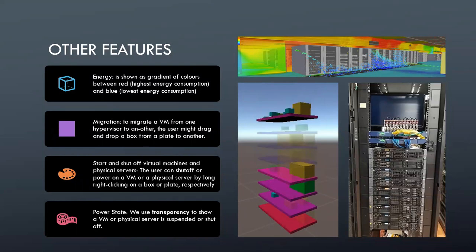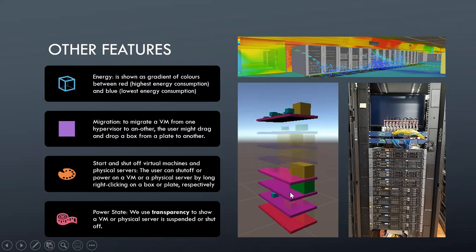We can also do that for the plate, since these plates are also transparent and can be turned on and off. Lastly, we represent the power state using transparency to show a VM or physical server is suspended or shut off. When it's transparent, it's shut off or suspended; when it is opaque, it is turned on. This hypervisor is turned off whereas this one is on, and this VM is suspended or turned off whereas this one is on.